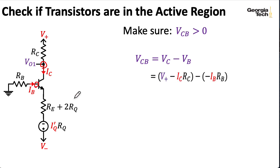So the voltage at the collector is going to be our power supply voltage, V plus, minus whatever we lose with our collector current flowing across RC, which is just ICRC by Ohm's law.